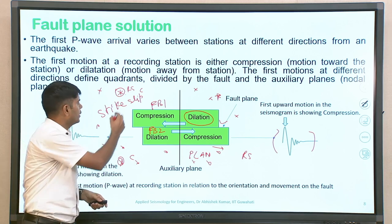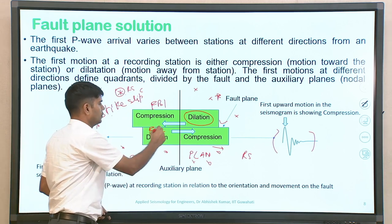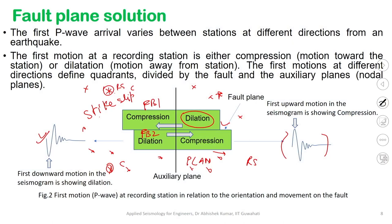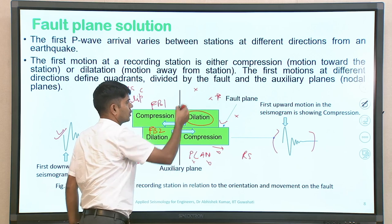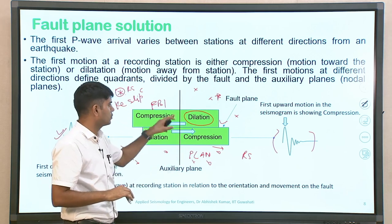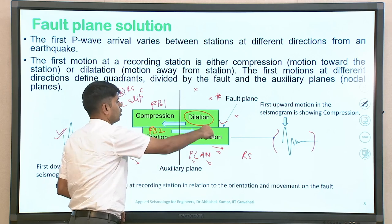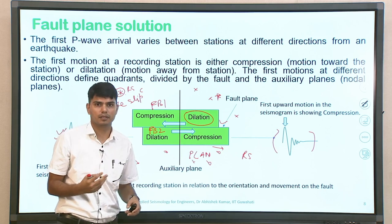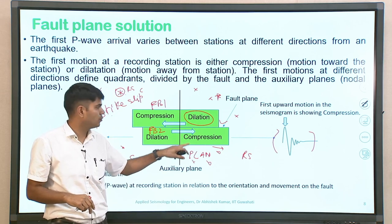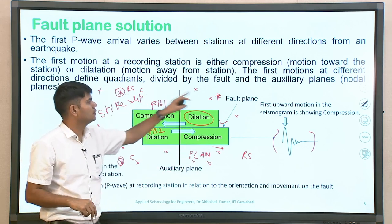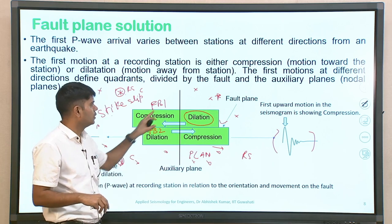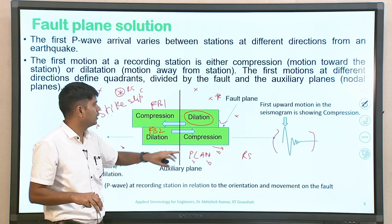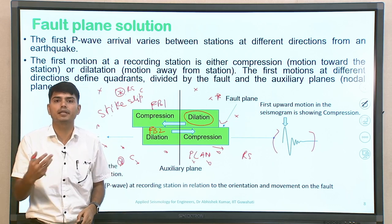Whenever we go with fault plane solution using a beach ball, it will indicate the possible movement along the fault plane. The two blocks are moving with respect to each other. Taking into account the first P-wave motion at four recording stations, some will experience compression and some will experience dilation. You can then locate the regions indicating compression and the regions indicating tension. Plotting these onto a circle — highlighting compression as black and tension as white — this is the beach ball solution.